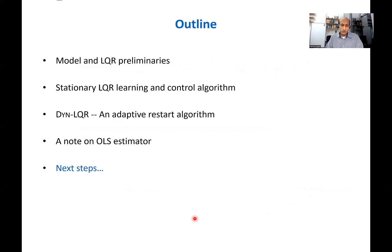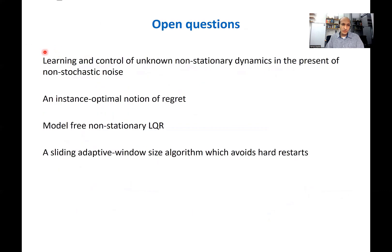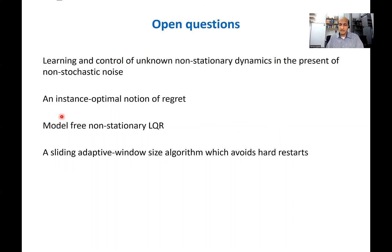Let me end with some possible next steps. One promising direction is extending our analysis to the case where the noise does not obey a Gaussian structure or where the covariance matrix may be unknown. Another interesting direction is instance-optimal regret: rather than minimax regret in terms of variation, obtaining a more nuanced result where regret is optimal for a given instance. Additionally, our algorithm was model-based — we estimate the dynamics and pick a controller optimal for the estimated model. A much more powerful and general approach would be a model-free algorithm that directly learns the policy. Thanks for attending my talk. Please feel free to send any questions by email.